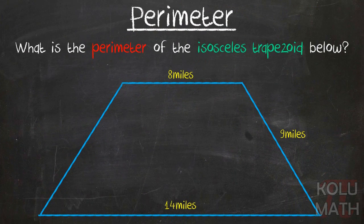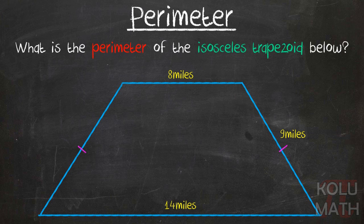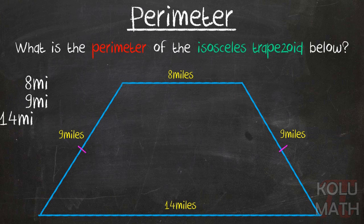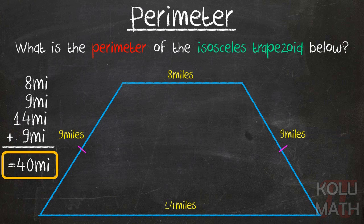Since those two sides are congruent, we can go back to our problem. And if this side is congruent to this side, and that side is nine miles, well, then this side is nine miles. And now we can just go ahead and add up those measurements. That gives us a total of 40 miles. And that's the perimeter of that isosceles trapezoid. Just that simple.